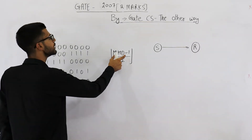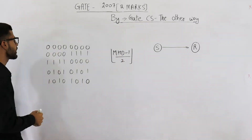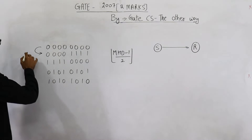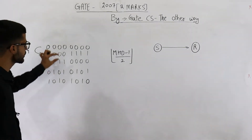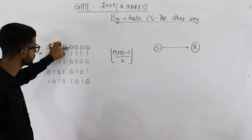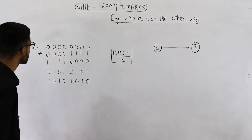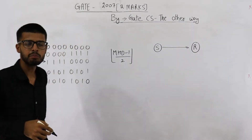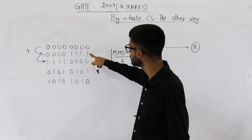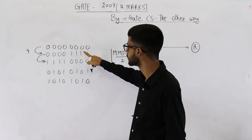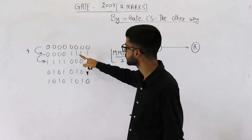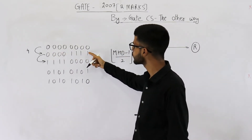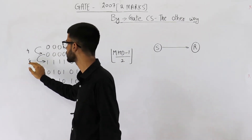For this, we need to know the minimum Hamming distance between any two pairs. In these two, the Hamming distance is 4 — because by changing only these four bits, you can reach from here to here. In these two, there is a Hamming distance of 8 because you need to change each and every bit; each and every bit needs to be toggled to reach from here to here. So Hamming distance is 8.